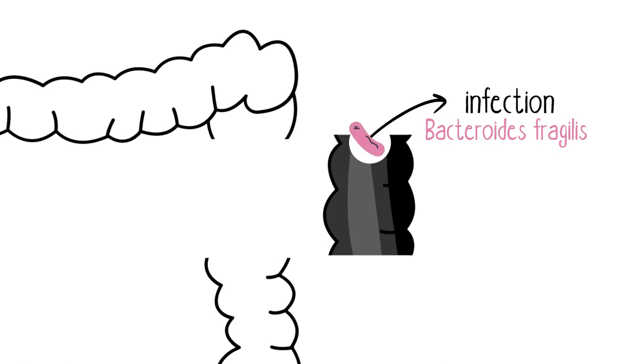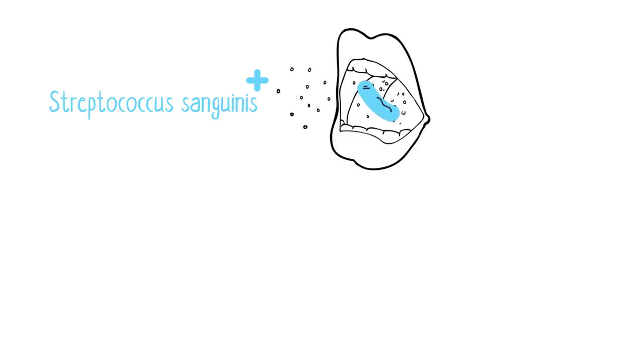Bacteroides fragilis is an anaerobic gram-negative bacillus, a common component of human colon bacteria. Streptococcus sanguinus is a gram-positive facultative anaerobic species that can be found in the oral cavity and less commonly in the GI tract.